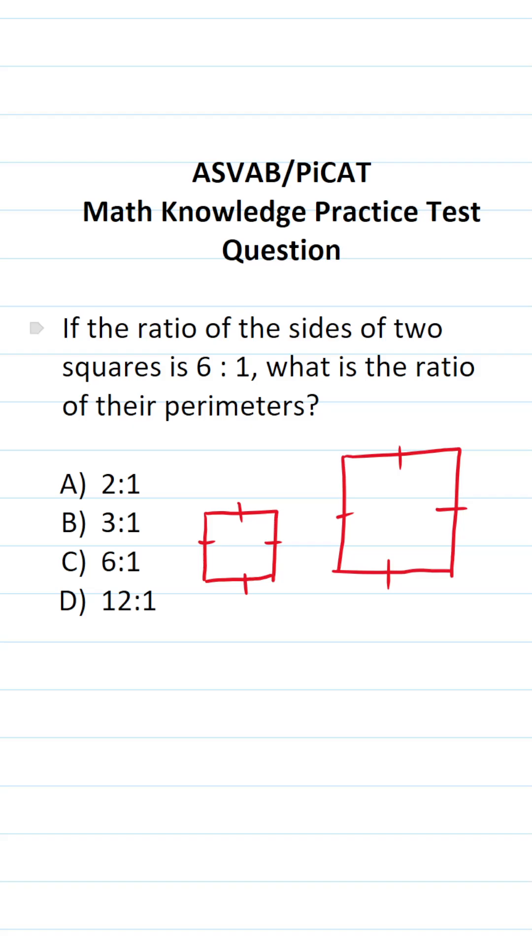What's more, we know the ratio of the sides of these two squares is six to one. So in other words, this side could be six, this side could be one. That gives us a ratio of side lengths of six to one.